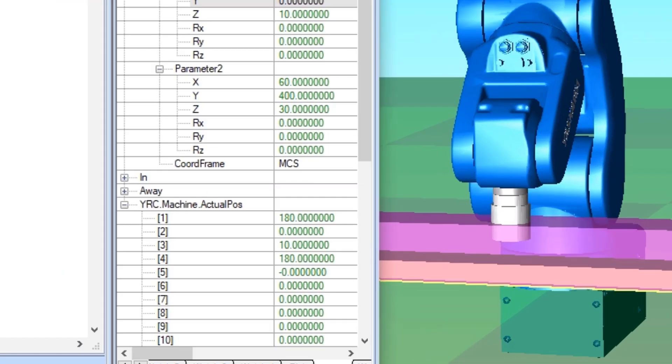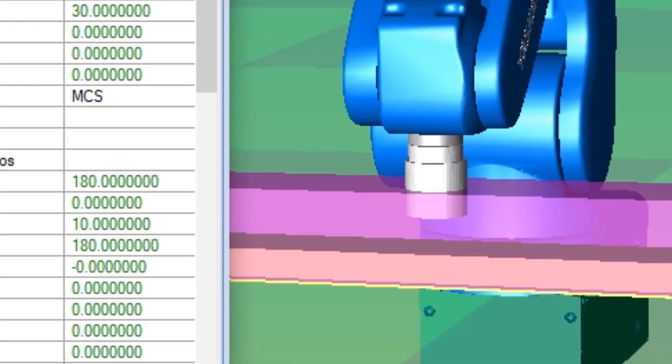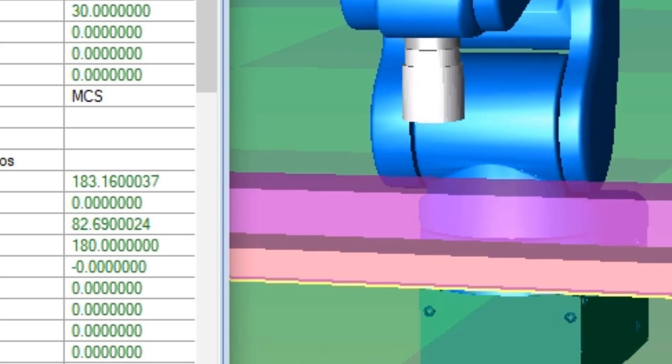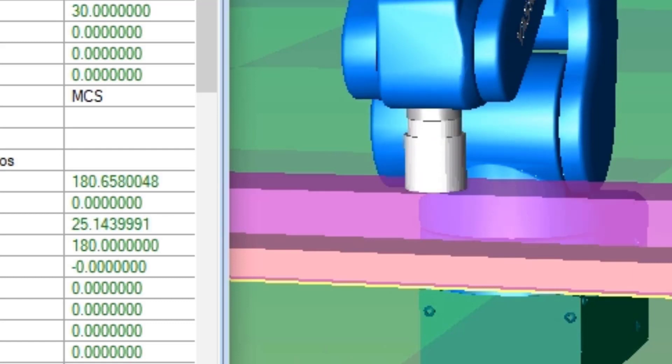Here's a quick preview. The controller can detect when the TCP has entered a cuboid region in the mechanism workspace and prevent the TCP from entering that interference zone.